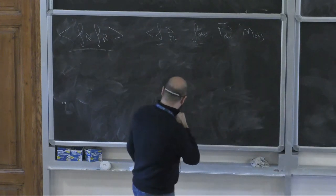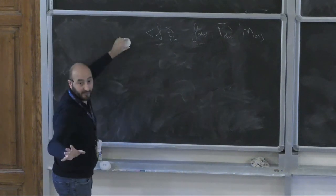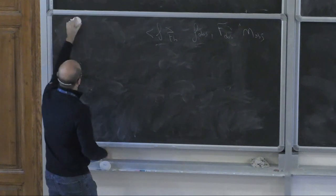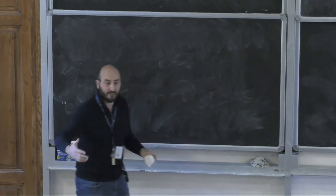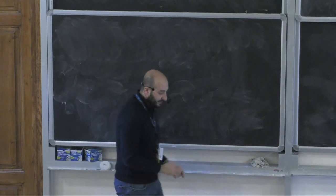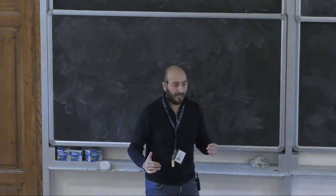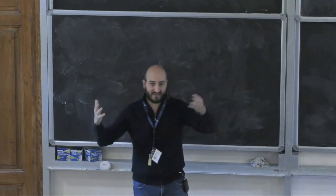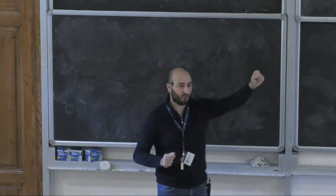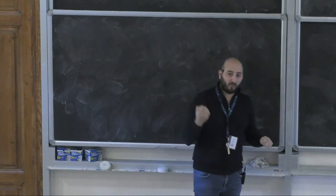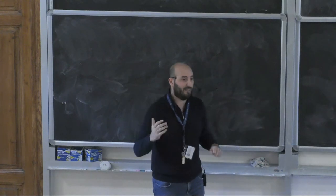Another thing to mention: it is an empirical fact that the timescales for cosmic rays to propagate within the galaxy and the timescales for them to be accelerated are rather different. Typical timescales for cosmic rays diffusing in a galactic environment are maybe 10 million years, while acceleration timescales are maybe two orders of magnitude shorter. This separation of scales allows us to factorize the problem.